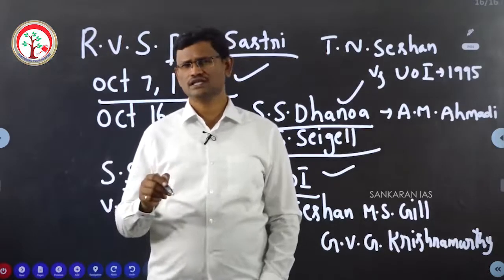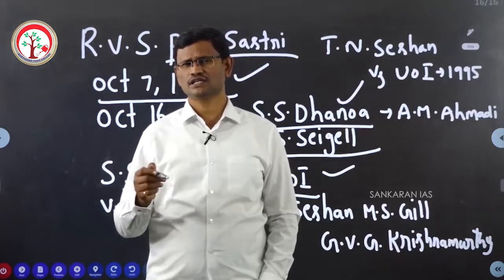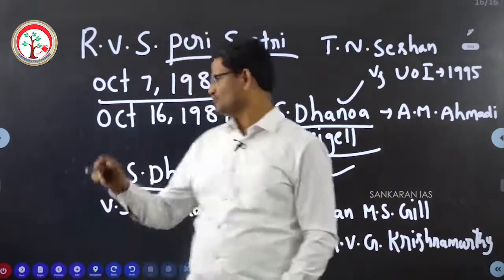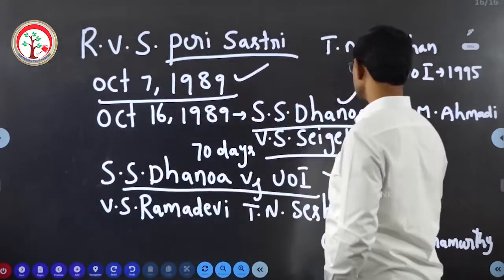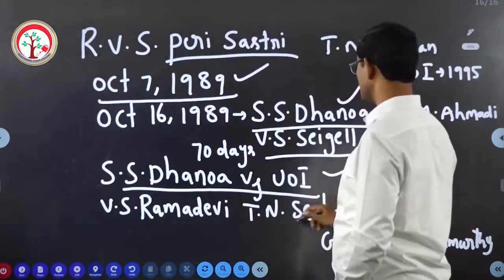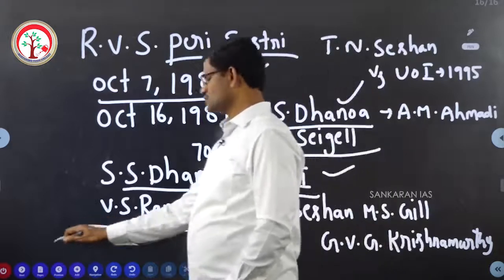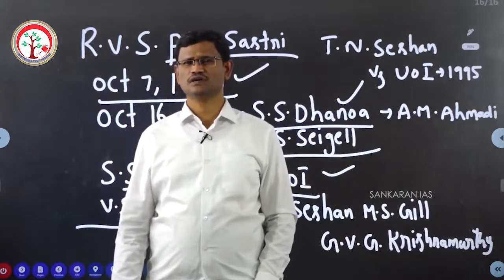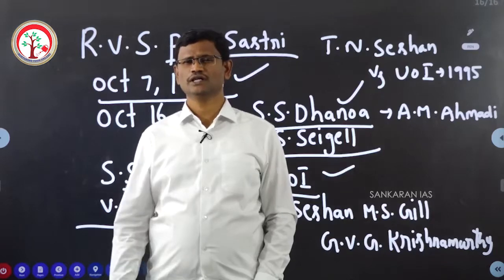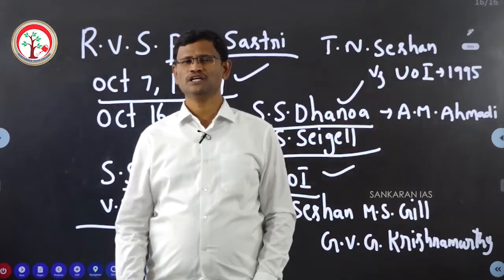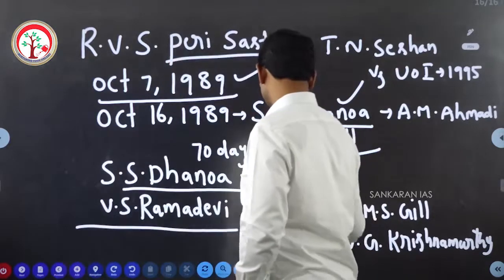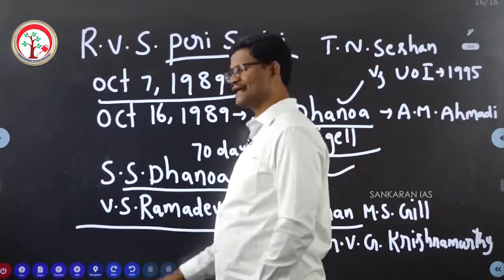Peri Shastri, the then Chief Election Commissioner, died while in office. V.S. Ramadevi served as the Chief Election Commissioner temporarily. In the meantime, a permanent Chief Election Commissioner was appointed, and the person appointed was T.N. Seshan.